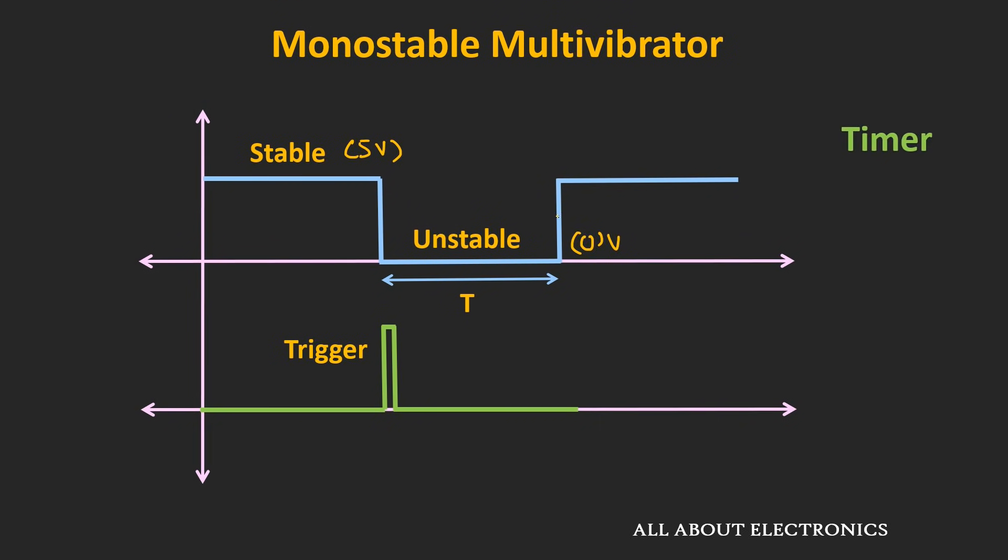This type of multivibrator is widely used in the timer applications. Let's say in one particular application, after a certain time from the triggering action, one wants to turn on the relay. In this type of applications, this monostable multivibrator is very useful.